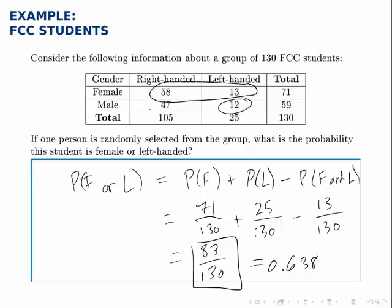The only category that isn't counted is the right-handed males, the only ones who don't fit this description of either female or left-handed. So there are multiple ways to get to the correct answer.